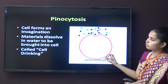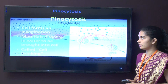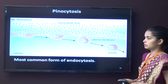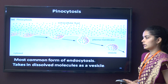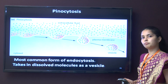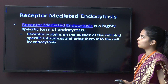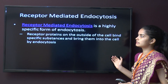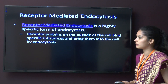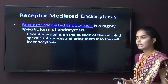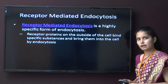Pinocytosis involves the cell forming an invagination so that materials dissolved in water can be taken in — it is known as cell drinking. It is the most common form of endocytosis and takes in dissolved molecules as vesicles.